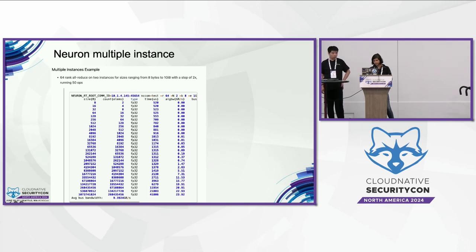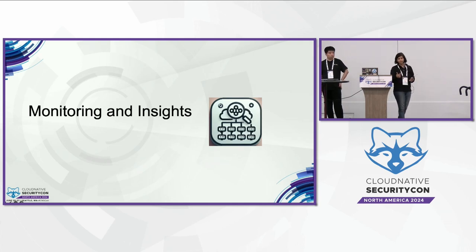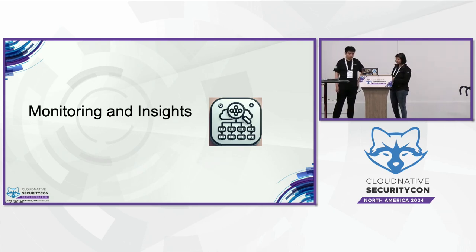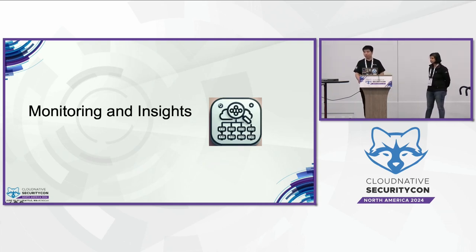That's it from me on problem detection and recovery. To recap: have a problem detector that's always on, and don't forget to validate your networking config before starting the job. I'll hand it back to Zeven to talk about monitoring and insights. Now I will continue to introduce the solutions to the monitoring challenges with AI chips as the second part of the session.